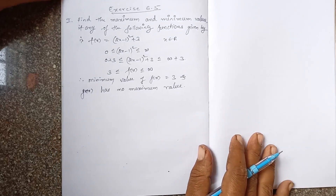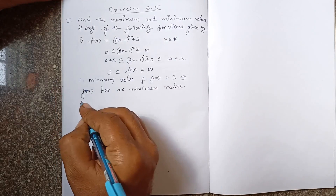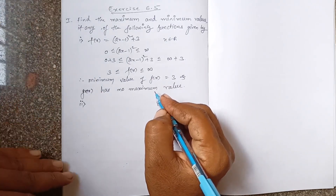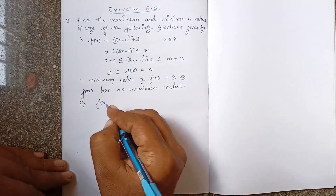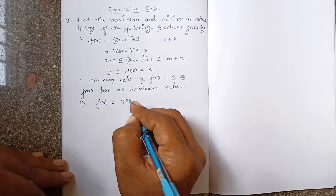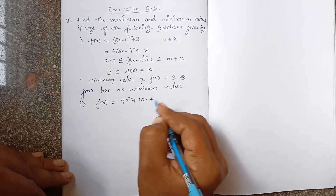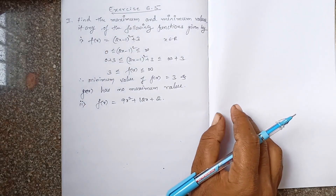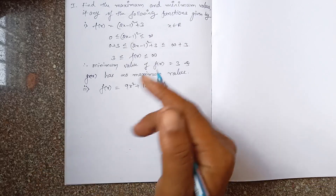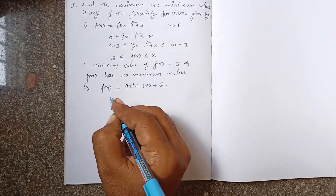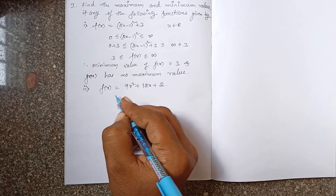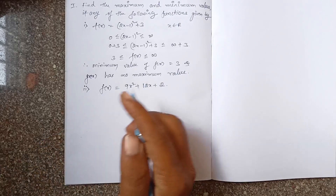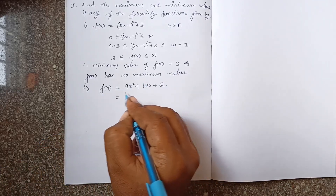This is about question number 1 under the first main. Let us take the second question: f(x) = 9x² + 12x + 2. We need to find its maximum and minimum value. There is no need to go for differentiating here - differentiating means finding local maximum and local minima. You need to use the completing square method.